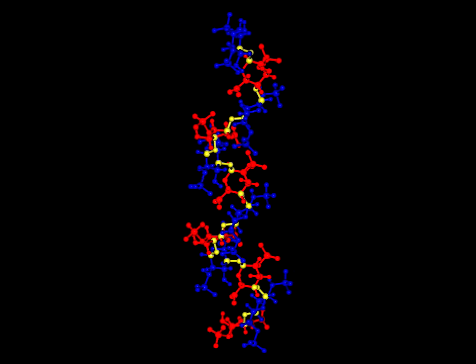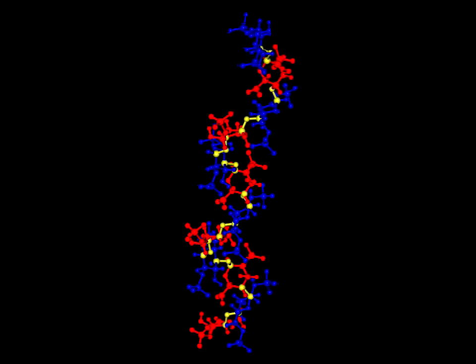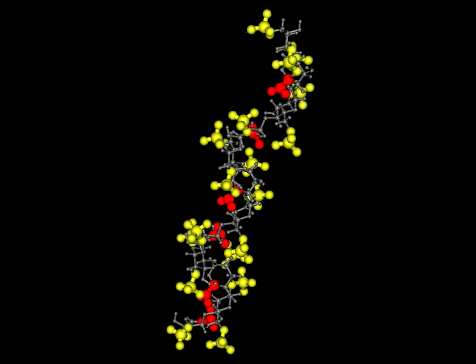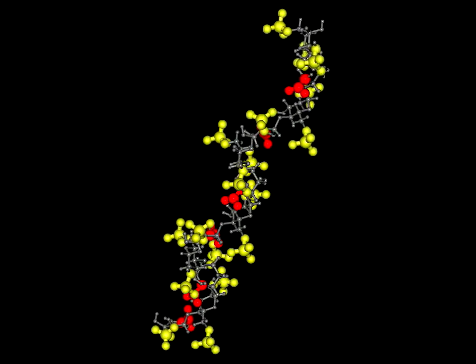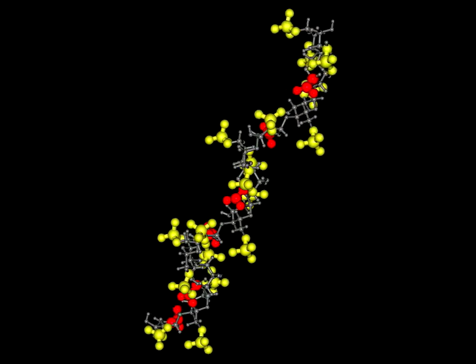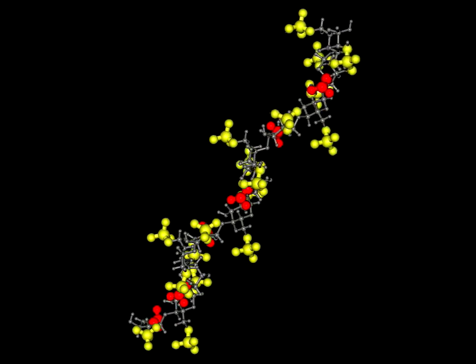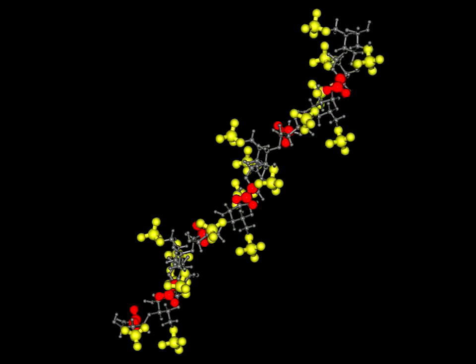One of the properties that make heparin so unusual is that it has the highest negative charge density of any known biological macromolecule. This is due to the high density of sulfate groups, shown in yellow, and carboxylate groups, shown in red. Each colored cluster contains a minus-1 charge, while the entire heparin chain has an overall minus-24 charge, and it is only 40 angstroms long.